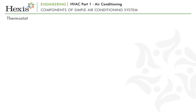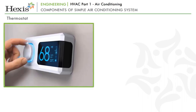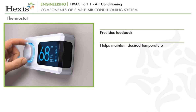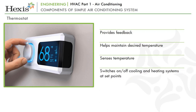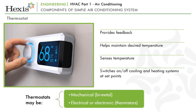The last component is the thermostat, which is used in air conditioners for feedback and to maintain the desired temperature in the area to be conditioned. It senses the temperature and switches on or off the cooling and heating systems at set points. Thermostats may be mechanical or bimetal, electrical or electronic, or thermistors.